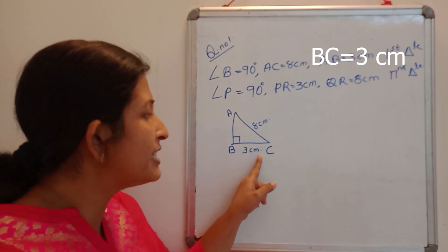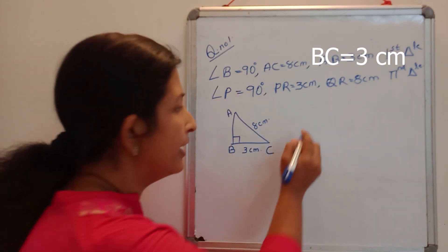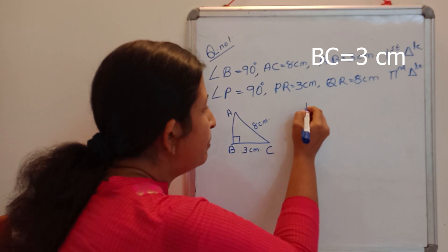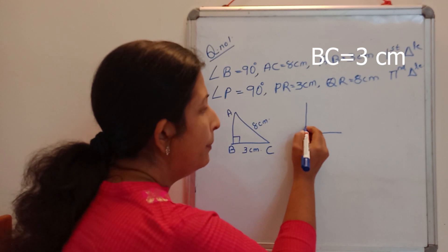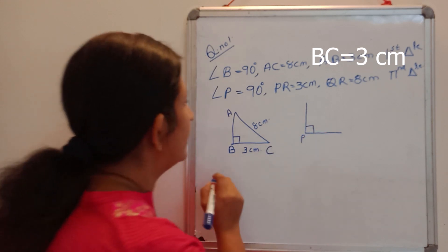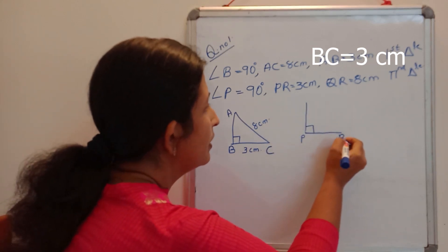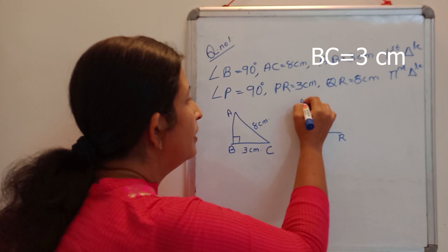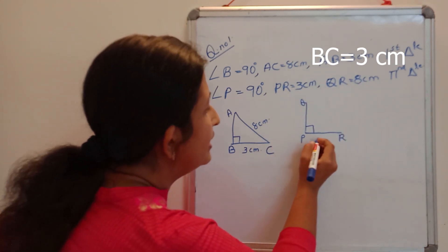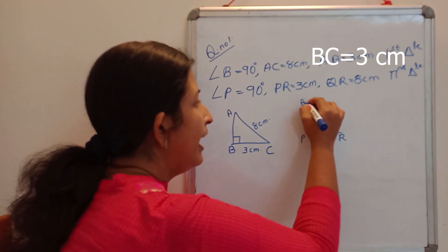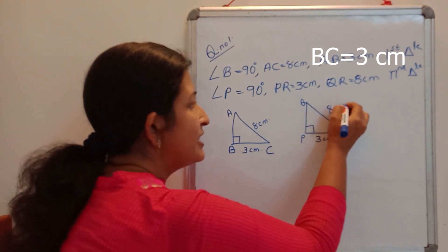one side they have given as 3 cm. Now I am going to draw the second triangle. They have given that at angle P it is right angle. So here I can mark P, this is right angle. And PR is 3 cm, then QR is 8 cm. Then QR is 8 cm, PR is 3 cm, and QR is 8 cm.